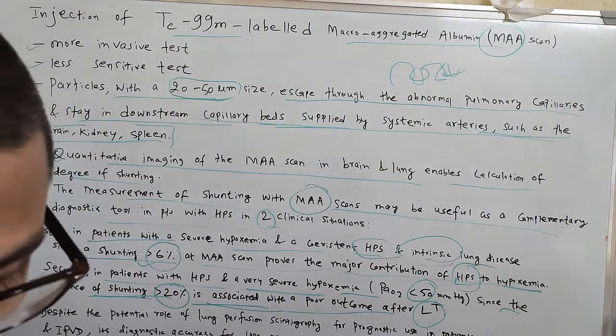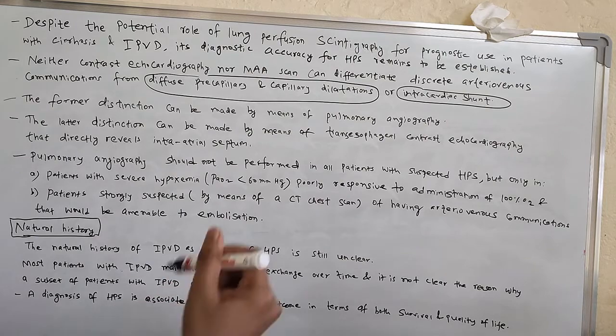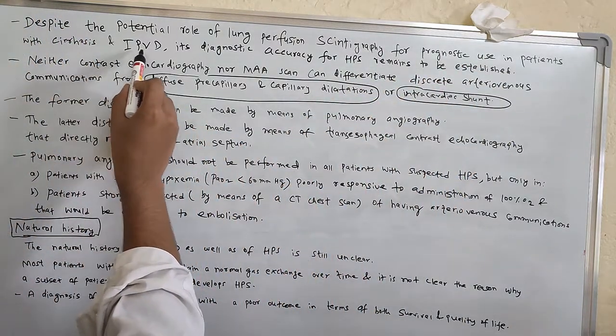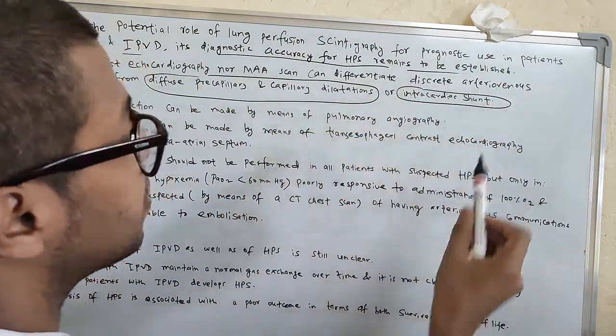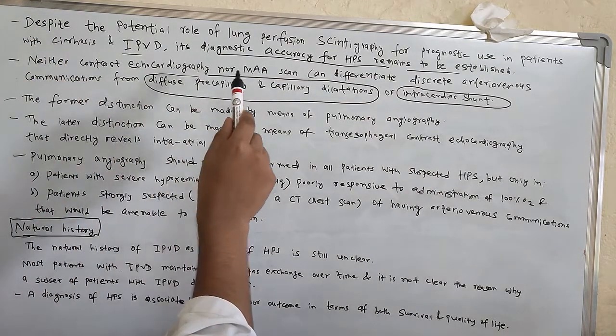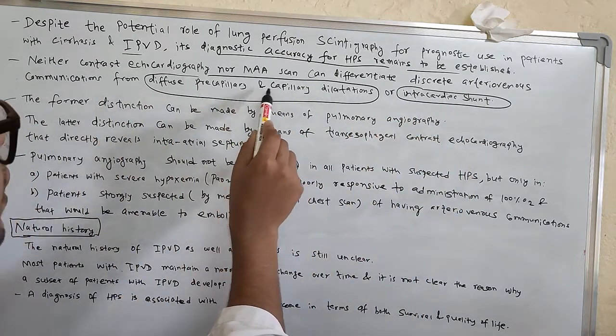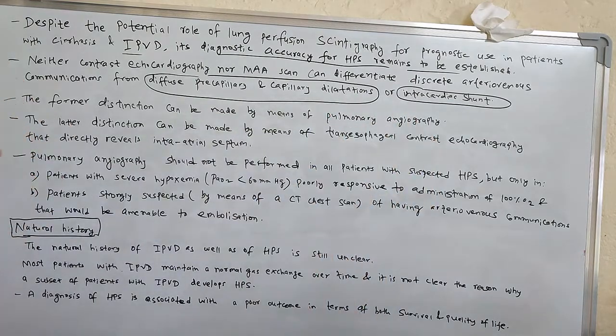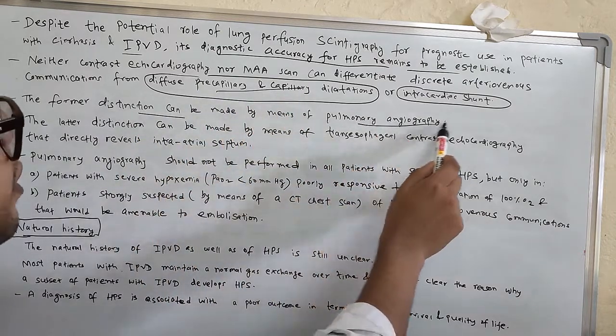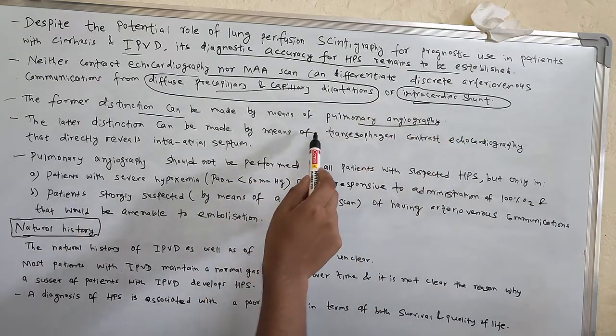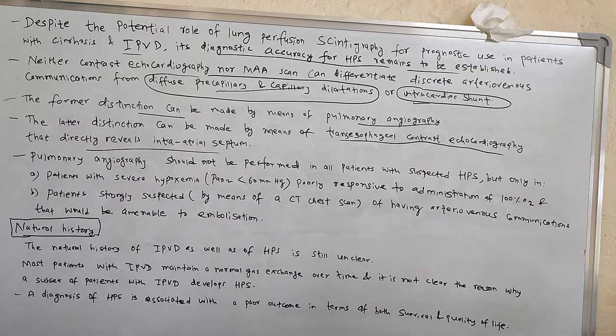Despite the potential role of lung perfusion scintigraphy for prognostic use in patients with cirrhosis and intrapulmonary vascular dilatation, its diagnostic accuracy for HPS remains to be established. Neither contrast echo nor MAA scan can differentiate discrete arteriovenous communication from diffuse pre-capillary and capillary dilatation or intra-cardiac shunt. The formal distinction can be made by means of pulmonary angiography, and the latter distinction can be made by transesophageal contrast echo that directly reveals the intra-atrial septum.